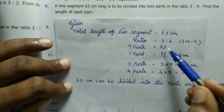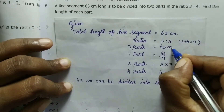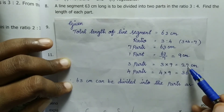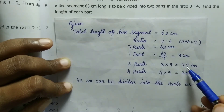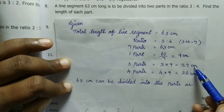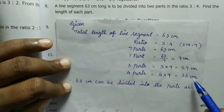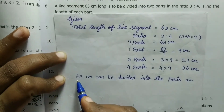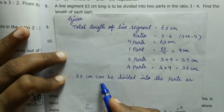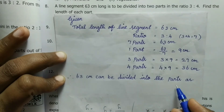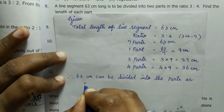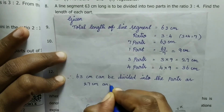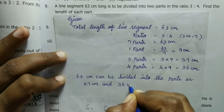The 63 cm line segment, divided in the ratio 3 to 4, gives 3 parts as 27 cm and 4 parts as 36 cm. Therefore, 63 cm can be divided into the two parts as 27 cm and the second part is 36 cm.